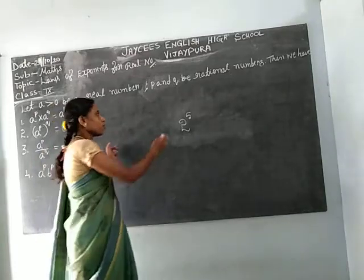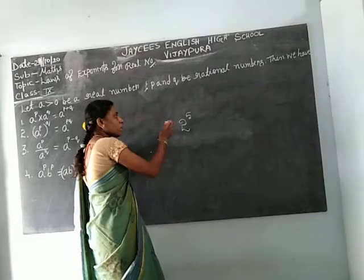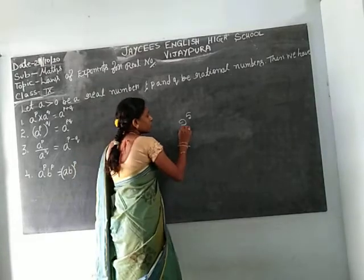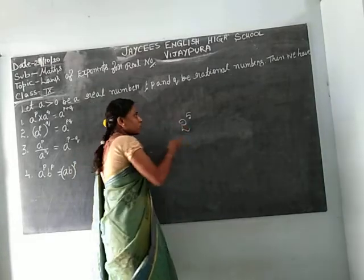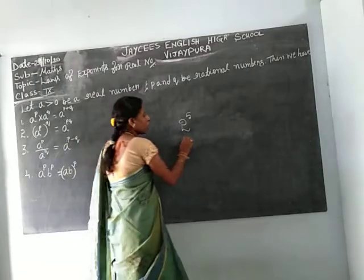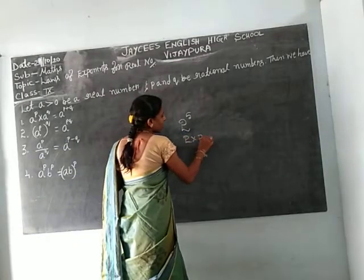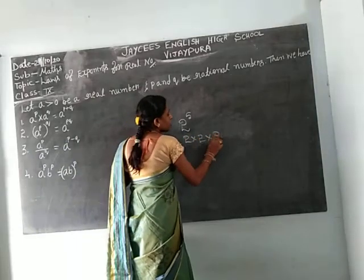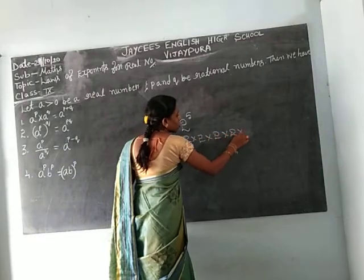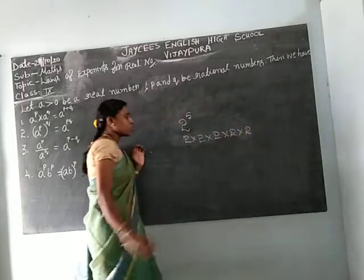Take 2 to the power of 5. 2 is the base and 5 is the exponent, or power. How many times is 2 repeated? 5 times. So it is 2 into 2 into 2... repeated 5 times.